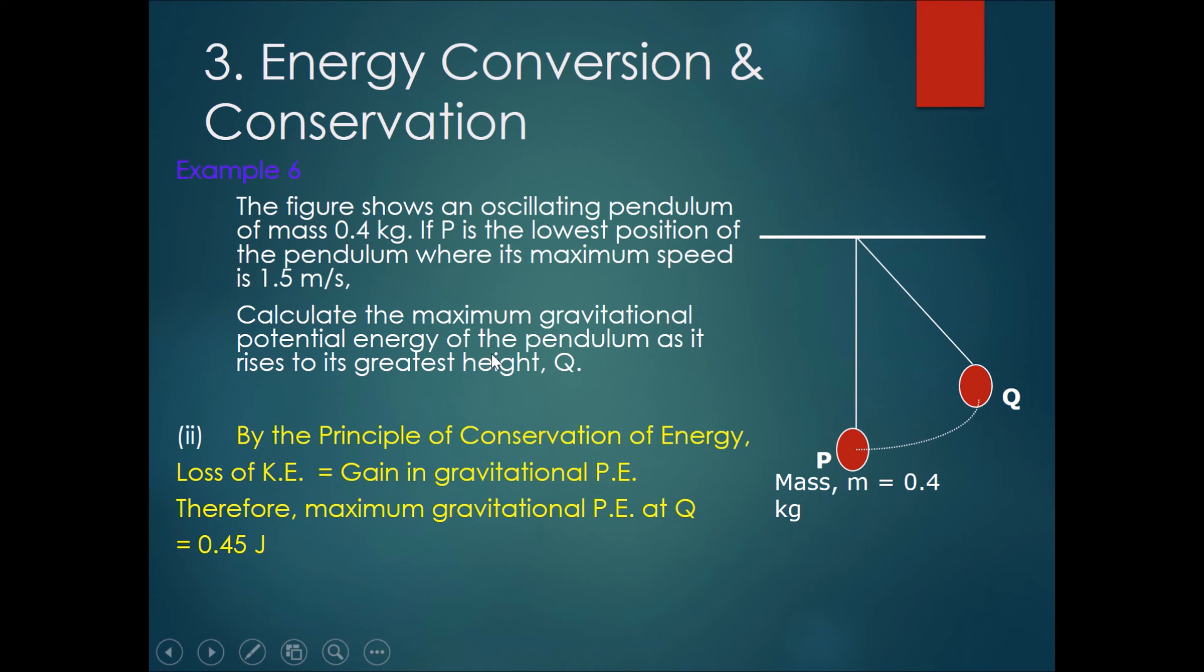The next one, they want you to calculate the maximum gravitational potential energy of the pendulum as it rises to its greatest height, Q. If you followed the principle of conservation of energy, you would know that if you assume that there is no loss in energy from P to Q due to friction or air resistance, then the loss of KE would mean the gain in GPE. Therefore, the maximum GPE at Q would just be the same number as before, 0.45 joules.